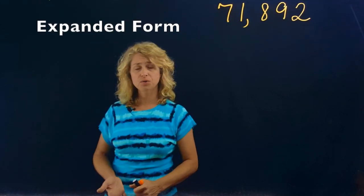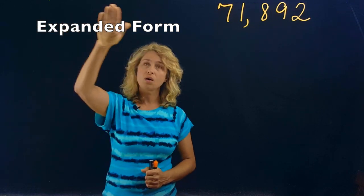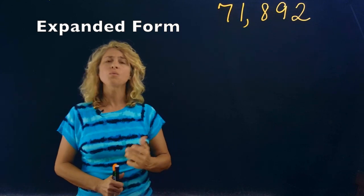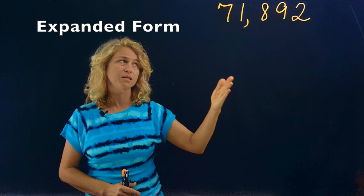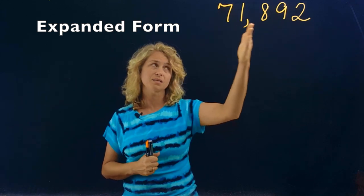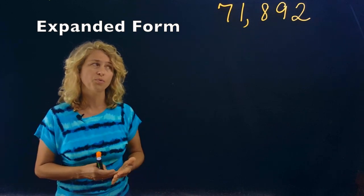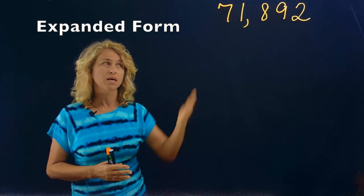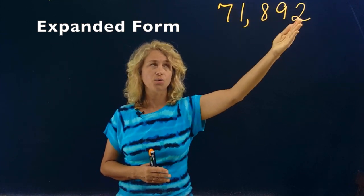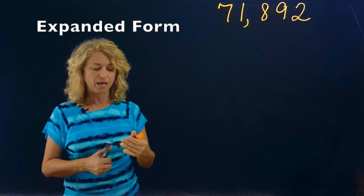We're going to continue working on place value. You learned how to say large multi-digit numbers using the boxes. Now I want to take some larger numbers and teach you how to do expanded form. We're going to continue with place value and work on expanded form in this session. For example, seventy-one thousand eight hundred ninety-two — let's learn how to expand this number.